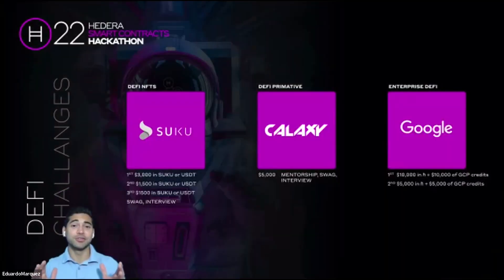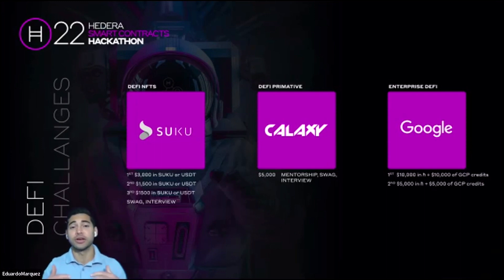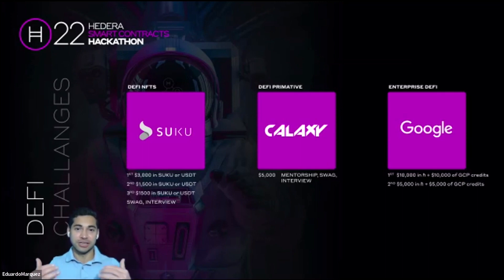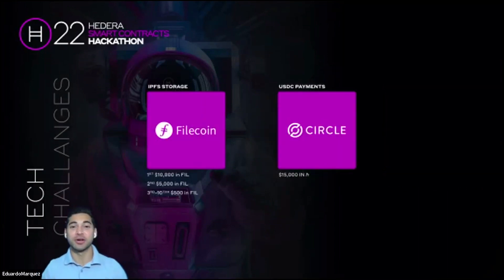Next, we're going to talk about DeFi challenges. Smart contracts offer the ability to go after very compelling use cases, and coming back to DeFi, we have three challenges being sponsored. The first is a DeFi NFT challenge by Suku — they're looking for developers to launch a DeFi protocol that uses the Hedera Token Service to interact with fungible and non-fungible tokens. Pretty exciting prizes for first, second, and third place. The second challenge is by Galaxy — a DeFi primitive challenge looking for a team that builds the best money Lego that can be reused by other teams as a DeFi component. And the third DeFi challenge is sponsored by Google, looking to bring DeFi into the enterprise world. The second category of challenges relates to technology. The first one here is by Filecoin — they're looking for the best implementation of IPFS for content addressing or decentralized storage. And the second is sponsored by Circle, looking for integrations with USDC, a stablecoin that facilitates payments — a very interesting component to integrate into your application, with exciting prizes in both HBAR and different tokens.